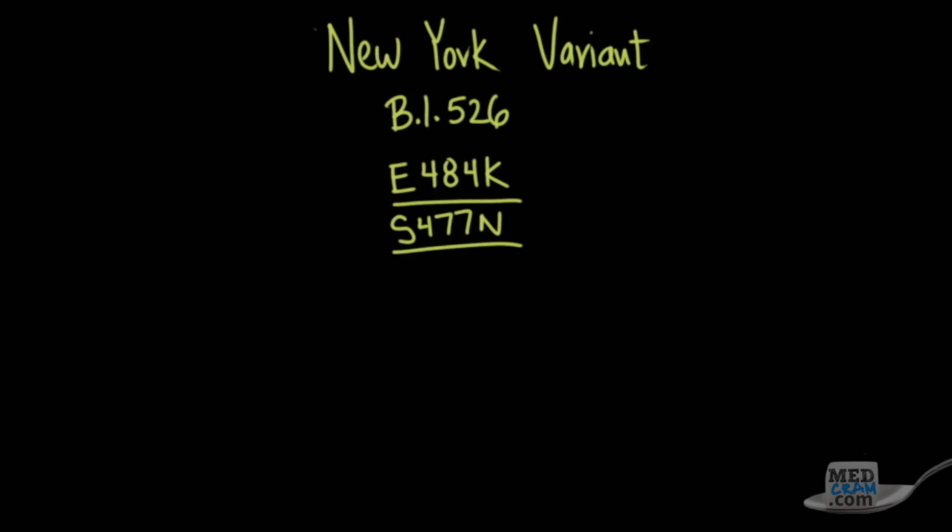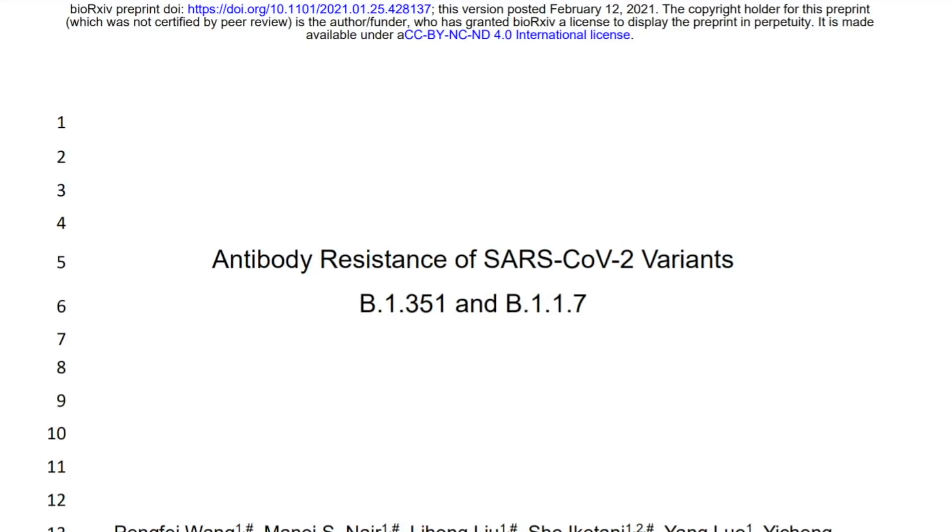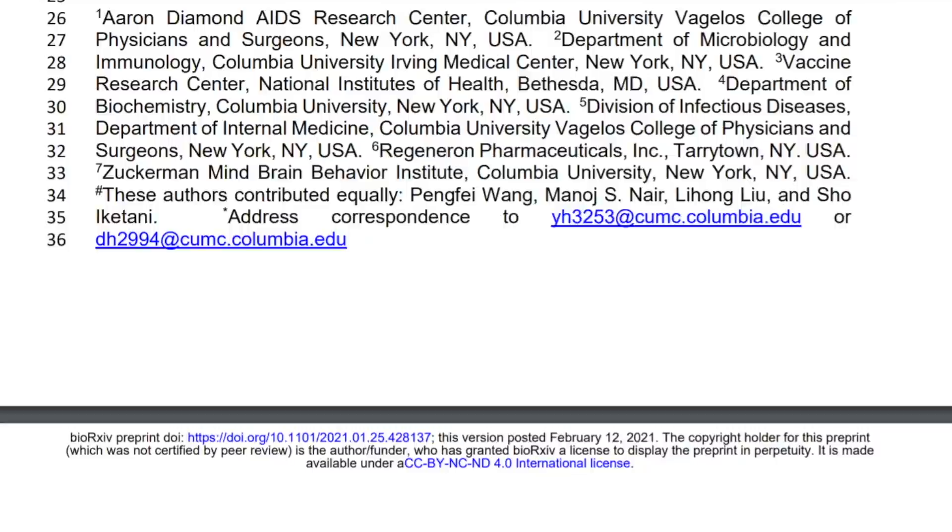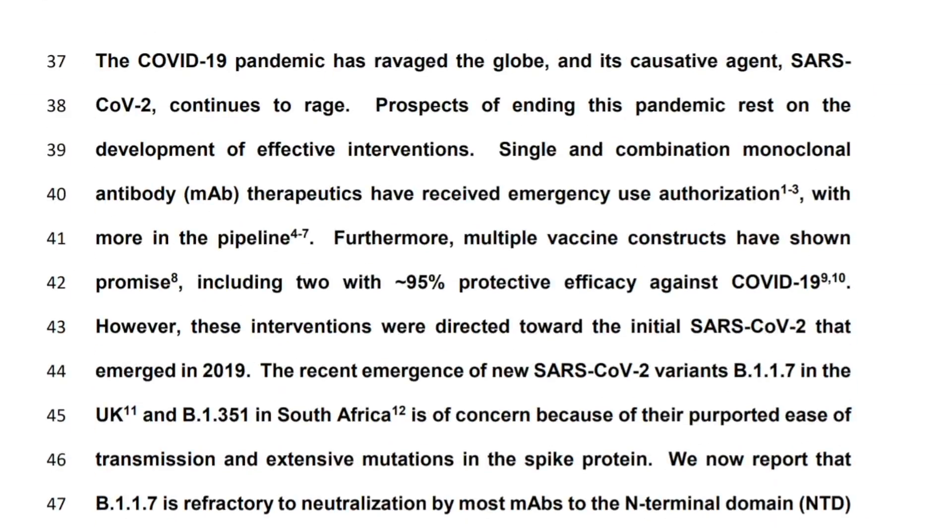As it turns out, this E484K mutation has been shown in some papers recently to indicate resistance to some of the monoclonal antibodies that have been used, for instance, by Eli Lilly. As you can see in this paper, which we will give a link to in the description below, it actually goes through and looks at a number of the different variants, specifically the B1.17 and also the B1.351, both the UK and South African variants respectively.